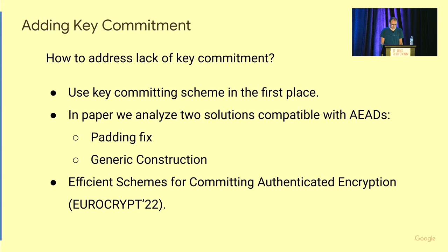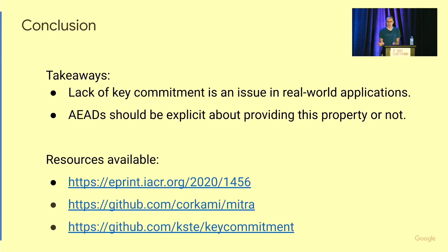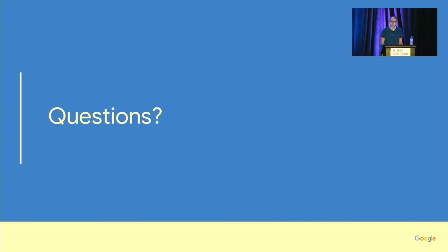The main takeaway from this talk: the lack of key commitment can be a problem in practice. There are real-world scenarios, and if you design protocols, keep in mind that key commitment may be an issue if you rely on the assumption that the wrong key will never decrypt as valid. Another takeaway is that when designing new authenticated encryption schemes, we should understand whether they are key committing or not — in the CAESAR competition for authenticated encryption, many schemes simply ignored this property. People should do analysis and ideally prove that their scheme provides this property. Our ePrint paper, along with tooling for file formats and cryptographic attacks, is available. Thank you.